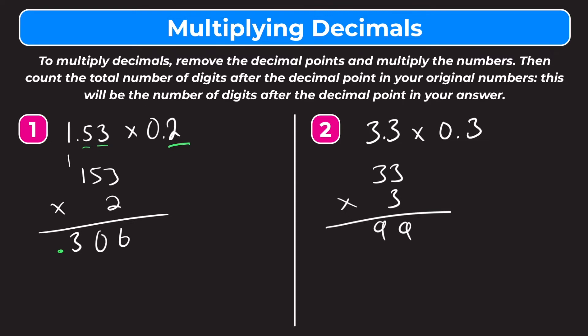Now we have to count the amount of digits to the right of the decimal in our original two numbers. We have 1 here in 3 tenths and 1 here in 3 and 3 tenths, so that's 2 total. So we have to have 2 digits to the right of the decimal point in our answer, and our answer would be 99 hundredths.